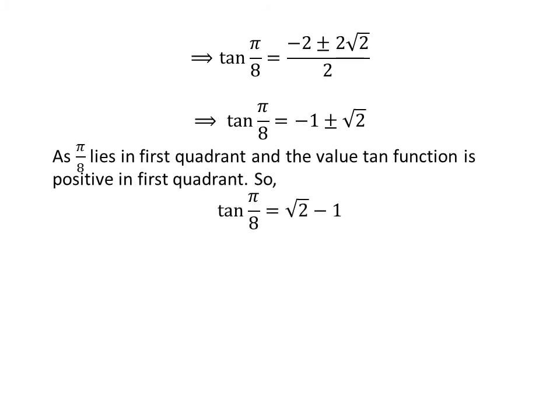Since pi upon 8 lies in the first quadrant and the value of the tangent function is positive in the first quadrant, tangent of pi upon 8 is equal to square root of 2 minus 1, as the other value minus 1 minus square root of 2 is a negative number.